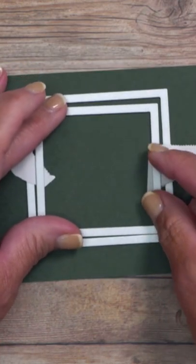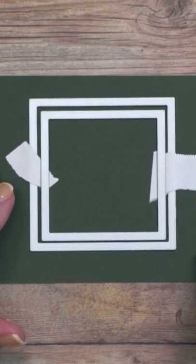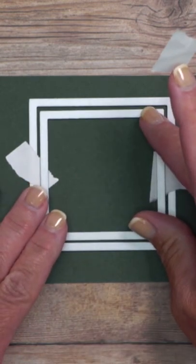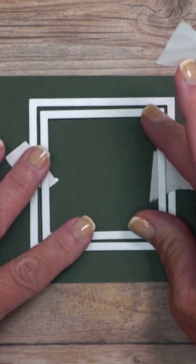You're going to take your next shape and nest it either on the inside or the outside depending on what you began with. What you're looking for is that area between the two dies that's going to create the frame.